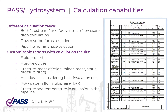Hydra System allows you to calculate upstream and downstream pressure drops and flow distribution inside different types of piping systems. It allows you to calculate nominal sizes for your pipelines and perform damage analysis. It has a customizable report with calculation results where you can view everything that happens inside your pipeline at each piping component — fluid properties, velocities, pressure drop, heat losses, and more. You will know what is going on at every point inside the pipe.